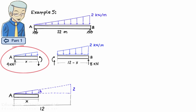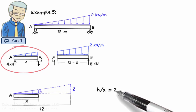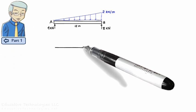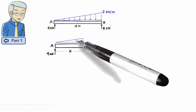We can use the geometric properties of similar triangles to find H. We can write H over x equals 2 over 12 or H equals x over 6. The free body diagram for the left segment of the beam then can be drawn like this.